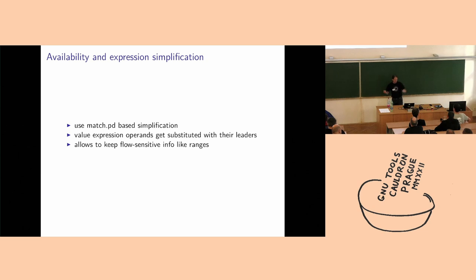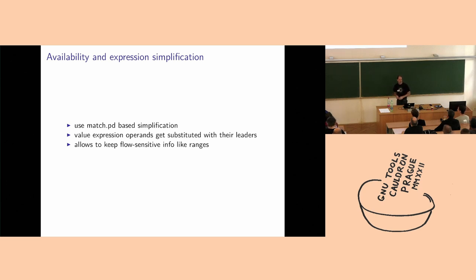The same applies to points-to info. We now have non-zero, which is used at some points and is now also flow-sensitive. There's more and more information that's flow-sensitive attached to SSA names, so it was problematic to use random representatives for operands rather than those valid at the program point where you're actually simplifying the expression.